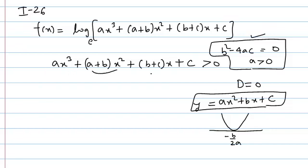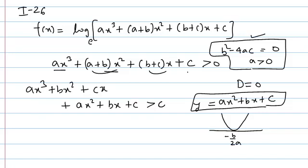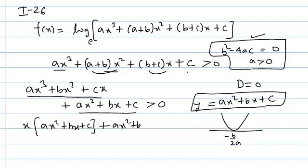You can see, if we separate out terms: ax³ plus bx² plus cx, the remaining terms are ax² plus bx plus c, greater than 0. Now you can see I can take x common from the first three terms, giving x(ax²+bx+c), and on this side also I have ax²+bx+c. So I can take the quadratic polynomial common, and the second factor is (x+1).